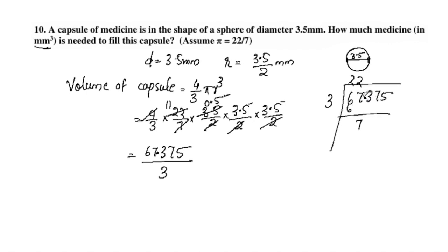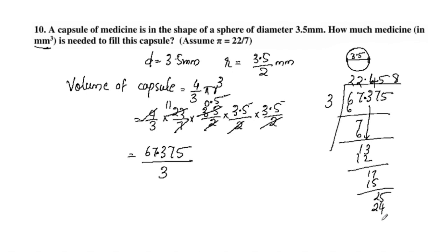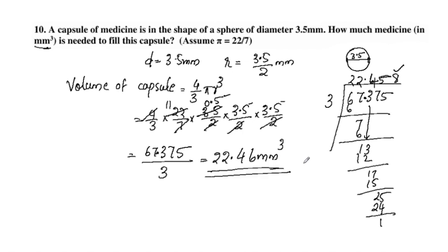Combining the decimal points — 3 digits — we get approximately 22.458 mm cubed. That is the volume of medicine needed to fill this capsule.